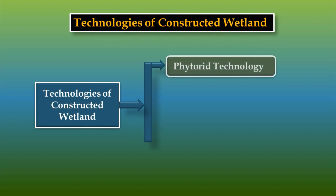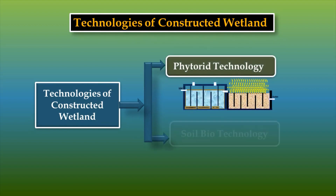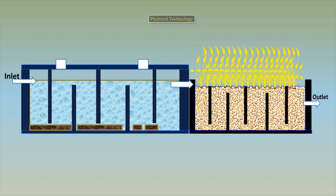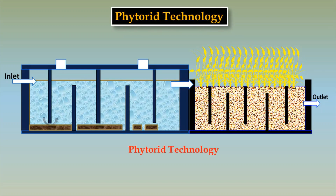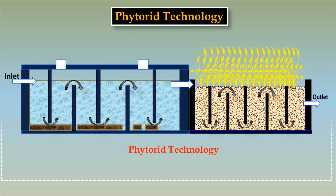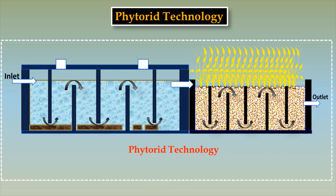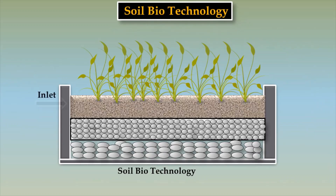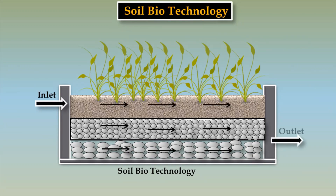Technologies of Constructed Wetland are Phytrid Technology and Soil Biotechnology. In Phytrid Technology, wastewater flows into the primary unit sedimentation tank and then flows into the phytrid bed. Soil Biotechnology is a treatment process which is carried out by soil microorganisms.